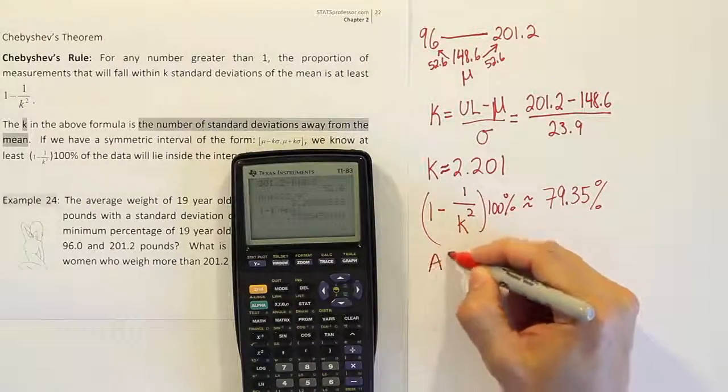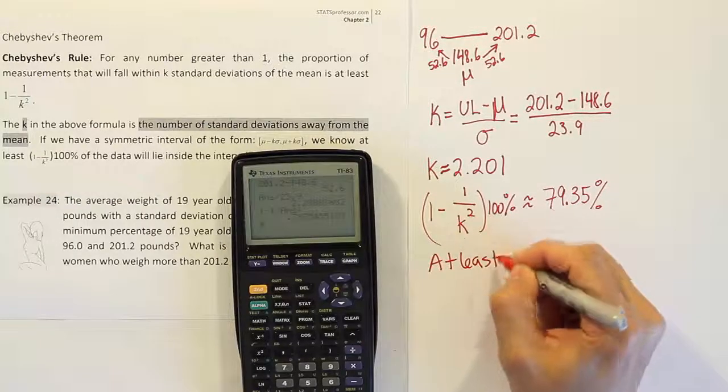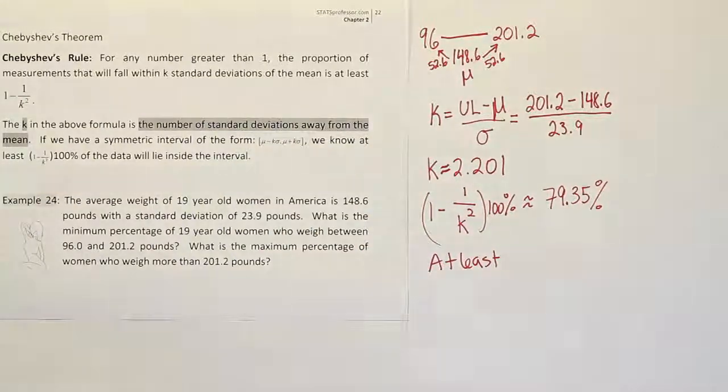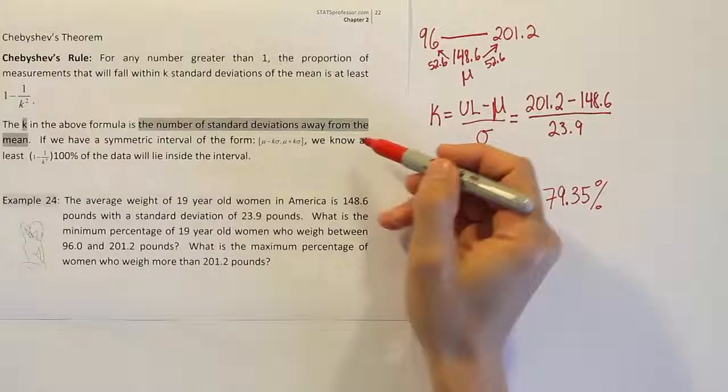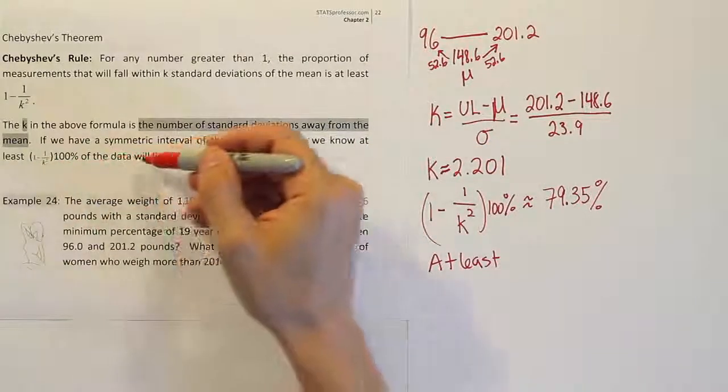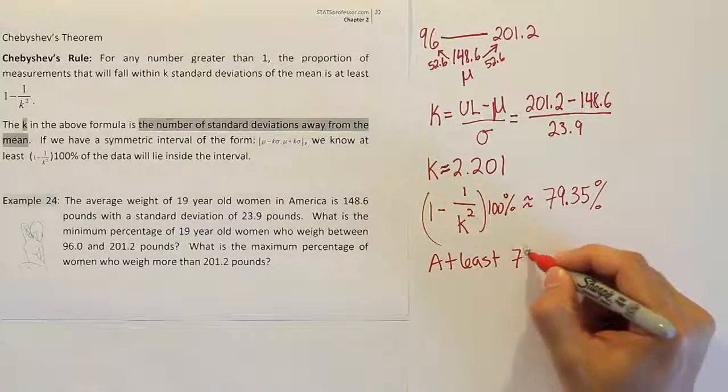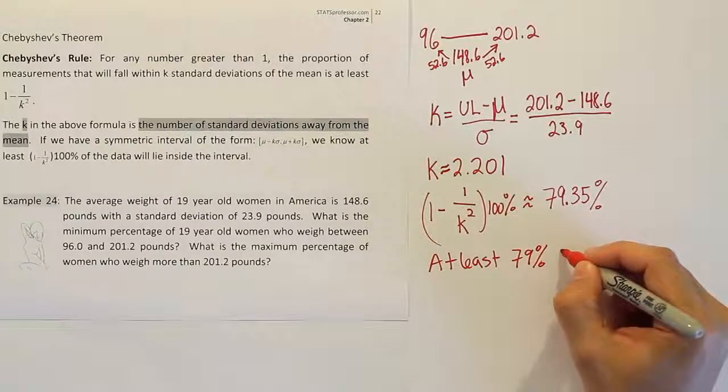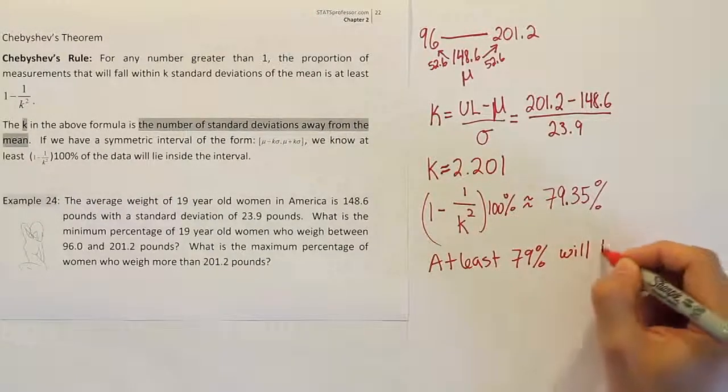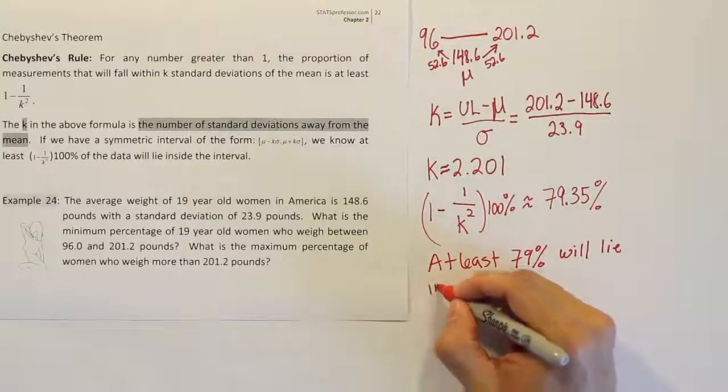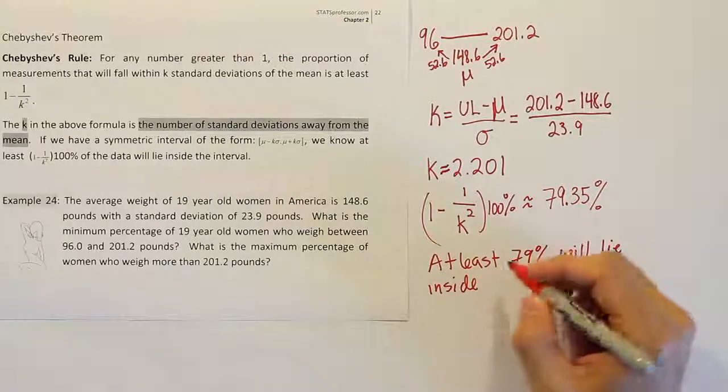So our final part of this problem is to say, hey, at least, because that's the terminology used in the formula, it says that at least this percent of the data will lie inside the interval. So at least 79% will lie inside the interval.